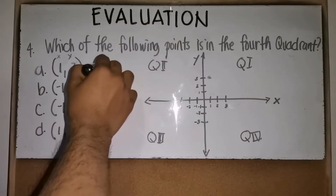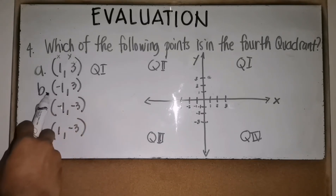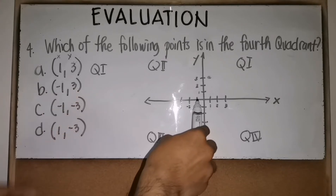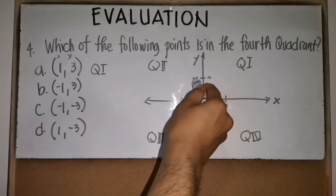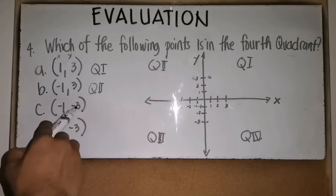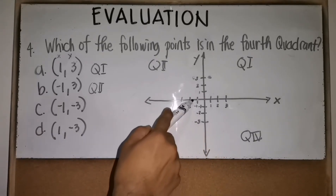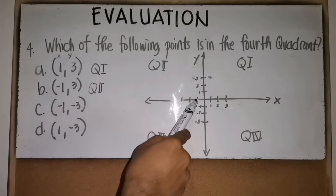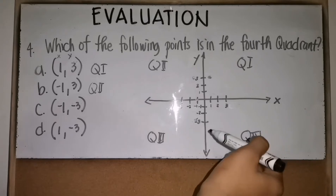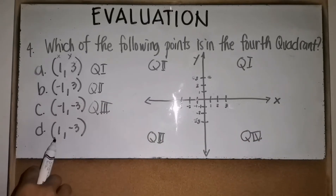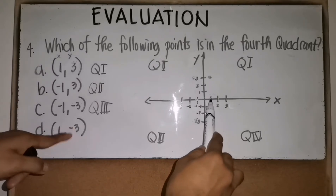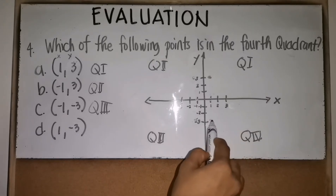Point B (-1, 3): x = -1 is to the left, y = 3 goes up — located in the second quadrant. Point C (-1, -3): x = -1, y = -3 downward — that is in the third quadrant. Point D (1, -3): x = 1 positive, y = -3 downward — counting 1, 2, 3, it falls in the fourth quadrant.